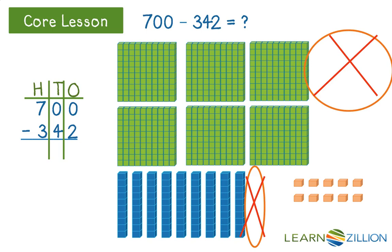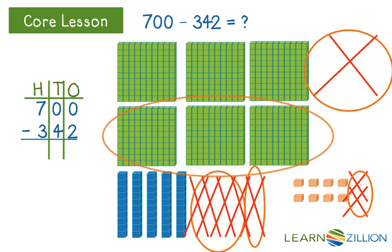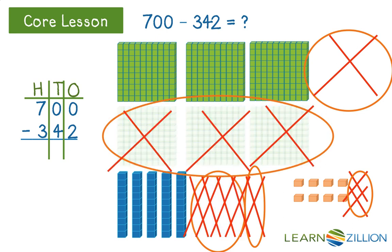Now, I can take away 342. So, I'll take away the two ones, so I'm left with eight. I'll take away the four tens, so I'm left with five. And I'll take away the three hundreds, so I'm left with three. So, 700 minus 342 does equal 358.